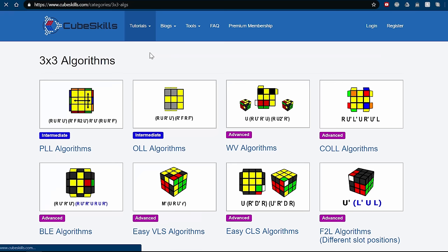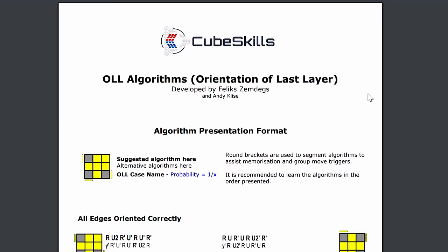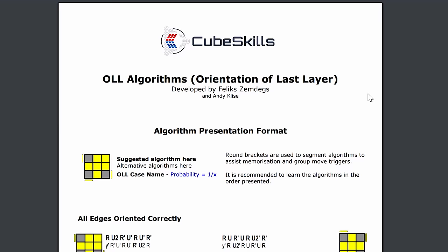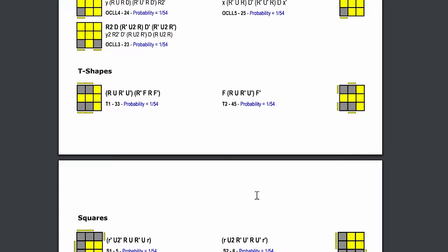I started by finding a complete list of all the OLLs, and this one from CubeSkills is probably the best one out there. It groups them all really clearly and often shows alternate algorithms. I printed these four pages out, laminated them, and it became my best friend for quite a while.